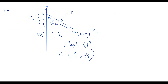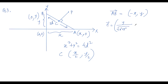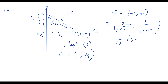Finding the AB vector gives us (−x, y). Since PC is perpendicular to AB, the orthogonal unit vector is (y/√(x²+y²), x/√(x²+y²)). Since x² + y² = 4d², taking the square root gives 2d, so the unit orthogonal vector simplifies to (1/2d)(y, x).